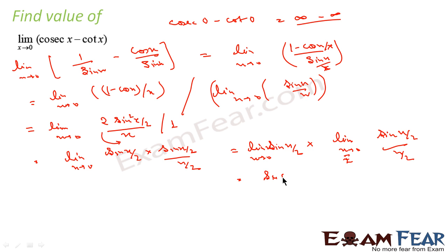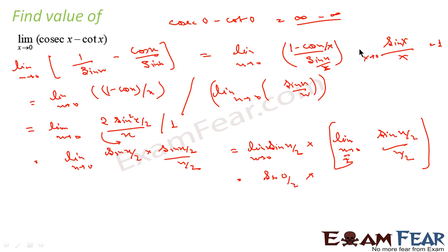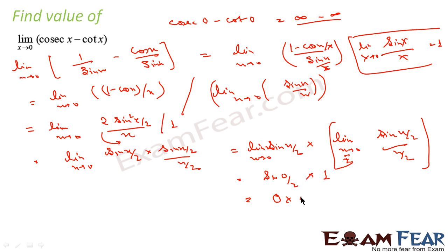This term equals 1 by the standard formula (sinx/x → 1 as x→0), where here x is replaced by x/2. The remaining sin(x/2) factor goes to sin(0) = 0 as x→0. So the numerator limit is 1×0 = 0, and divided by 1 gives 0. The total value of this function is 0. That is the answer.